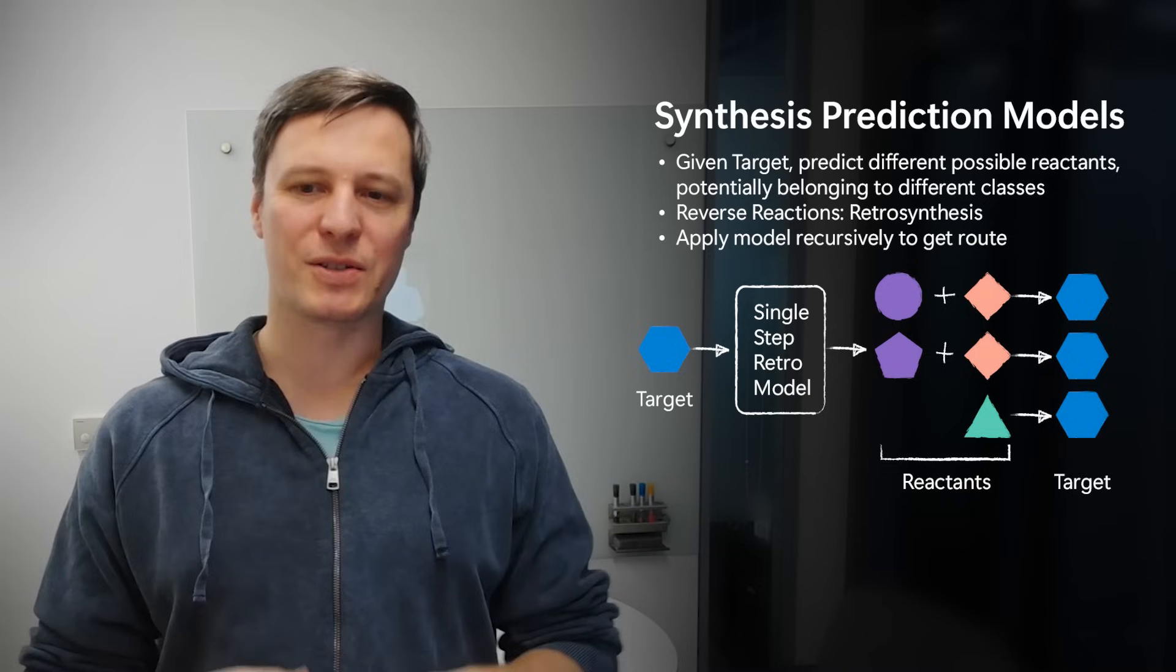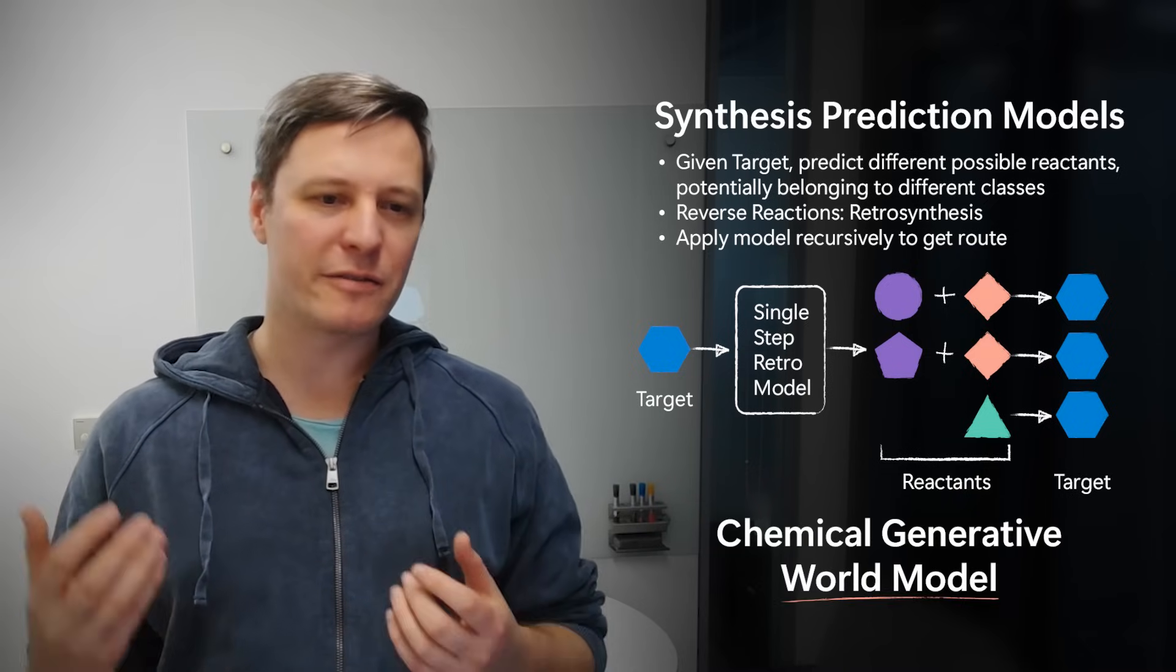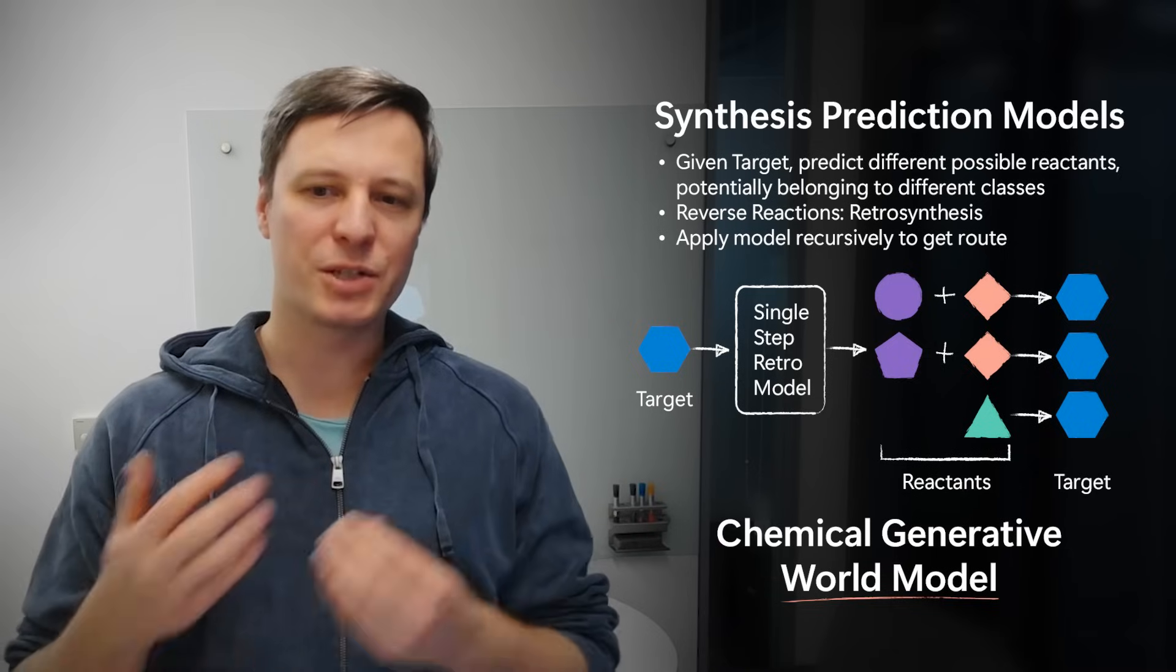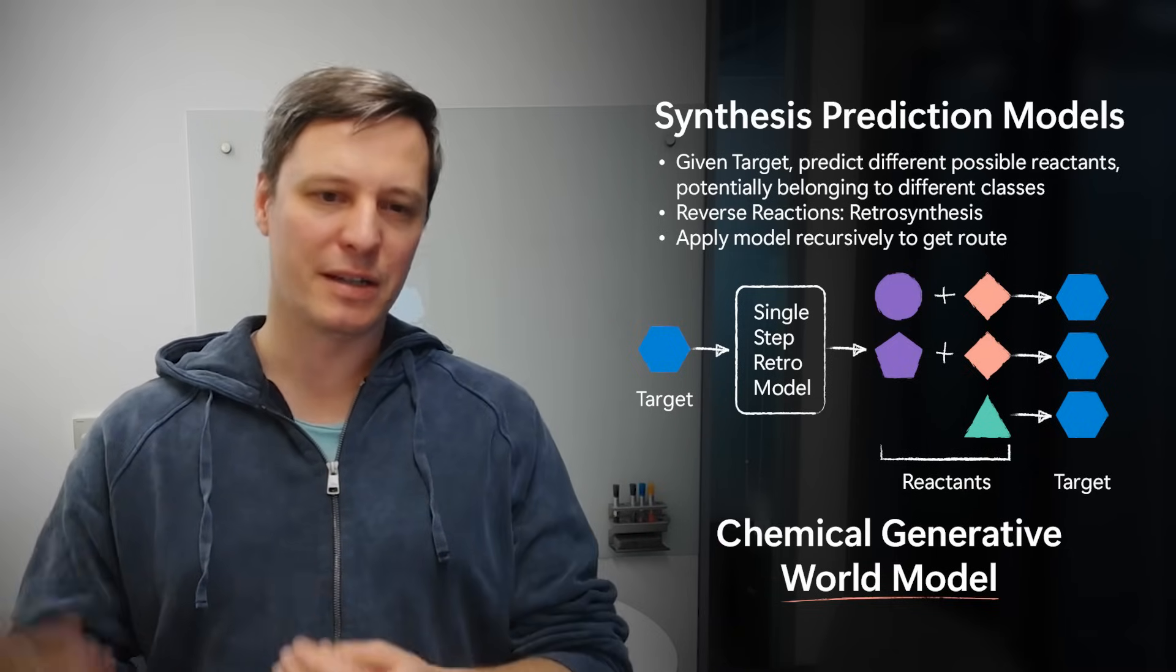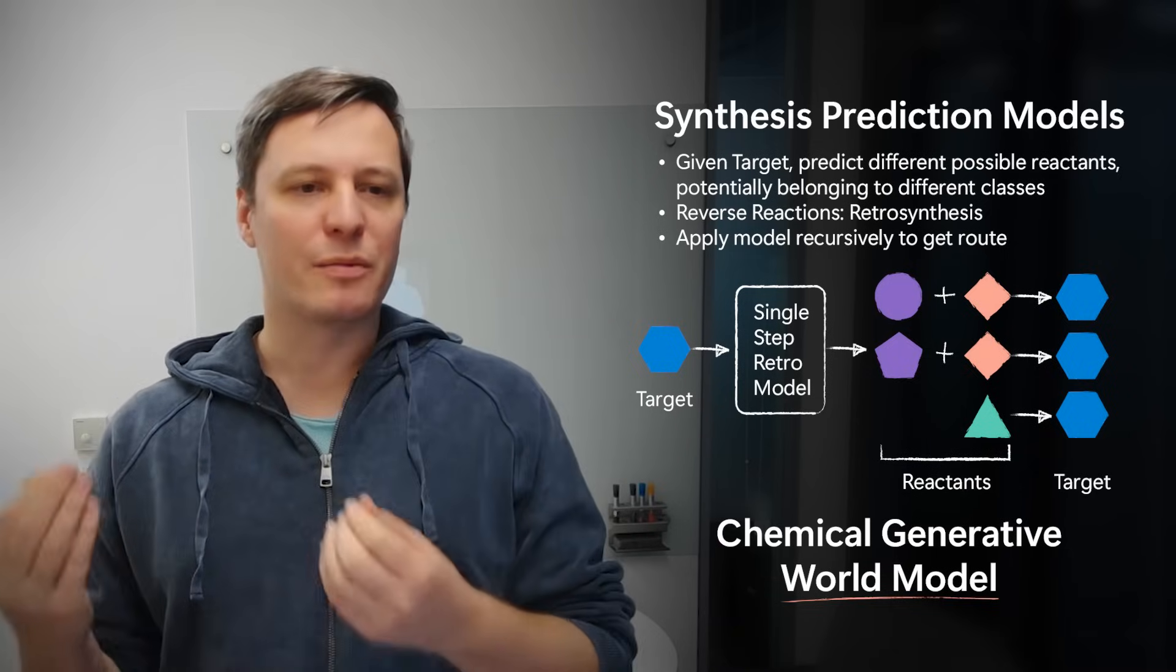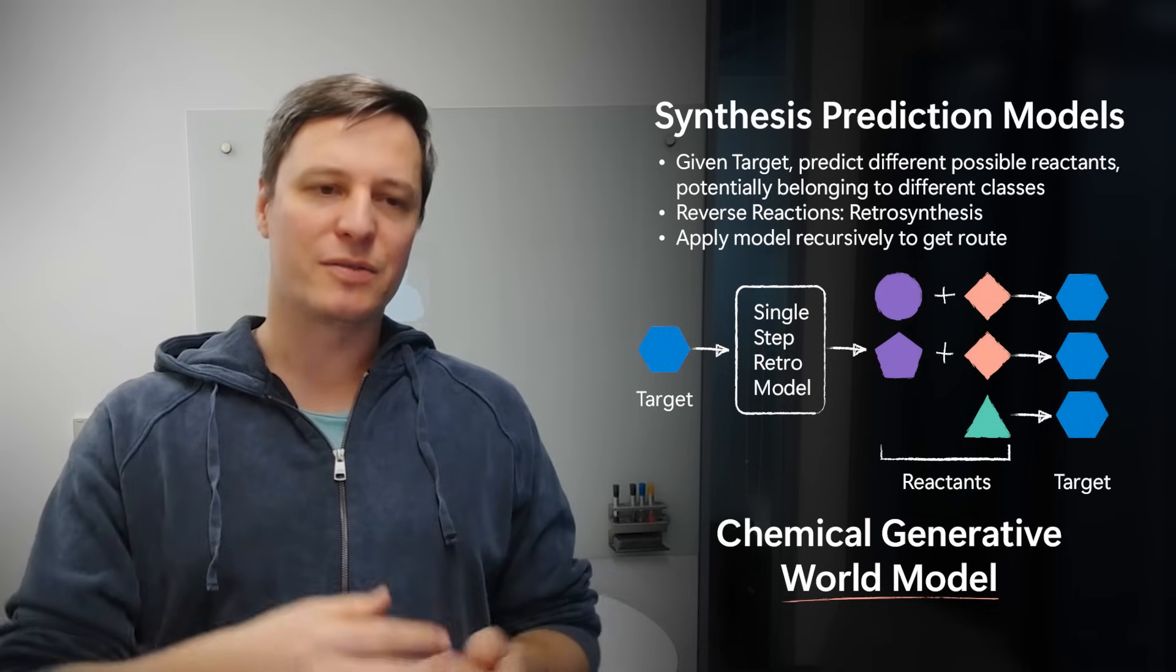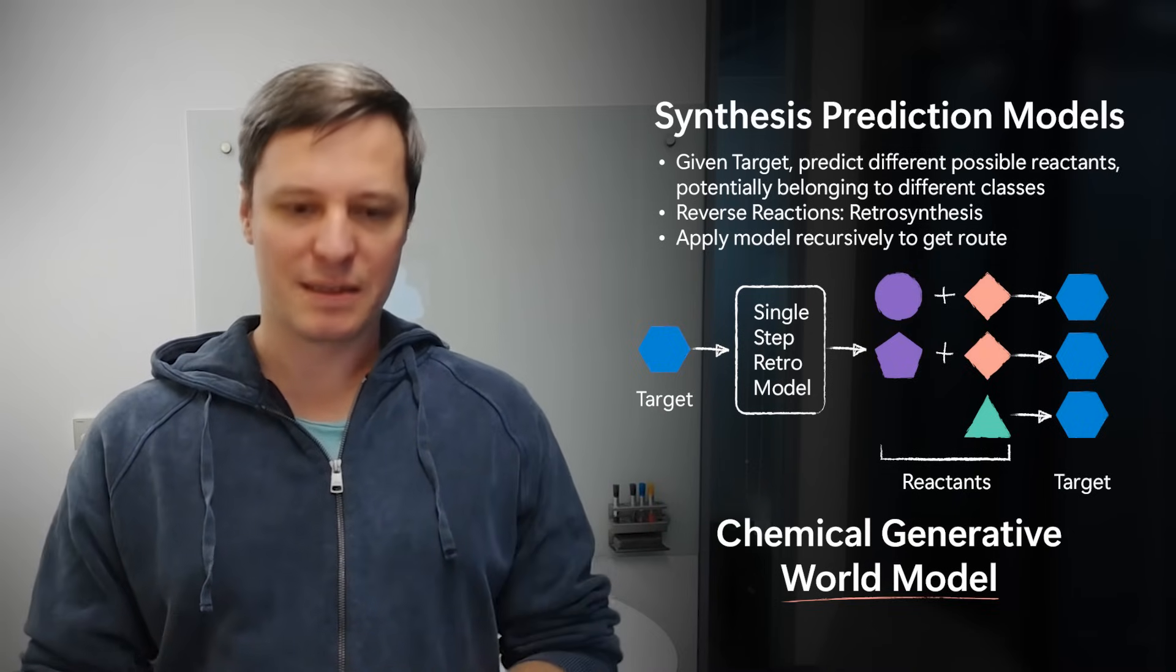We can think about this model that we're learning as a chemical generative world model that predicts which reactions are feasible for a given molecule in a given situation. And once we have such a model, we can plug it into a search algorithm and recursively apply it to get a full multi-step synthesis route.